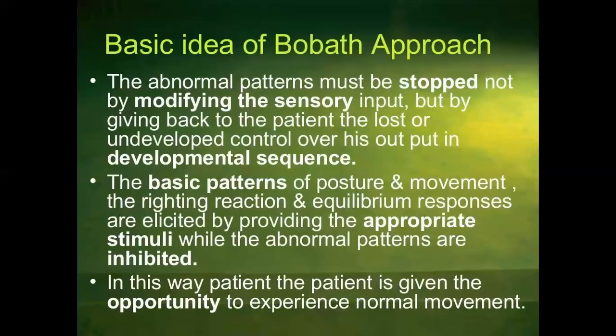Moving on to the basic idea of the Bobath approach: the abnormal pattern must be stopped — not by modifying the sensory input but by giving back to the patient the lost or undeveloped control over his output in developmental sequence. The basic patterns of posture and movement, the righting reaction and equilibrium responses, are elicited by providing appropriate stimuli while the abnormal patterns are inhibited. In this way, the patient is given the opportunity to experience normal movement.